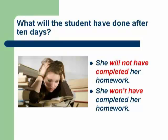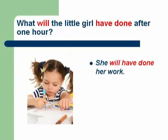What will the student have done after ten days? This is a lazy student who does not take interest in her studies, so you can guess that she will not have completed her homework within ten days. You can use the contraction 'won't': she won't have completed her homework. What will the little girl have done after one hour? She will have done her work, because you can see in the picture that the little girl is busy doing her work, so you can guess she will have done her work within one hour.